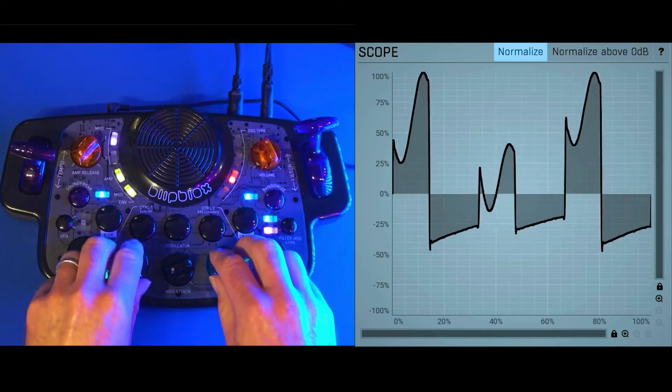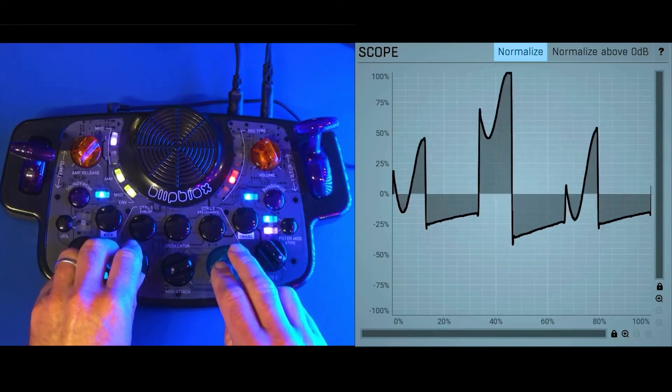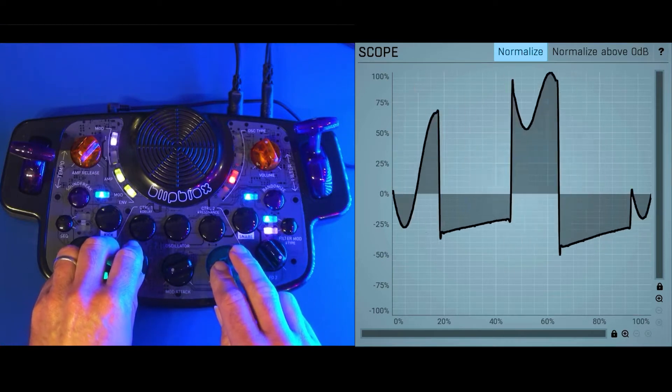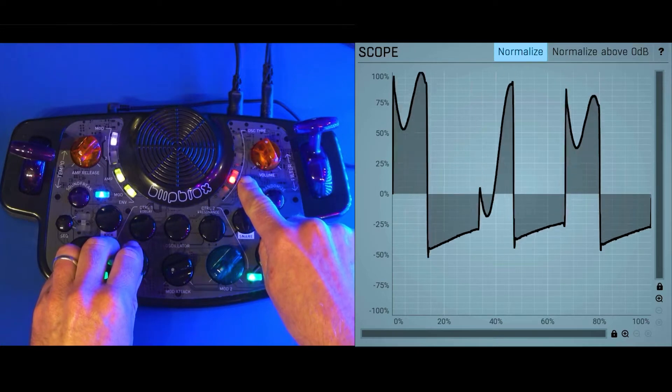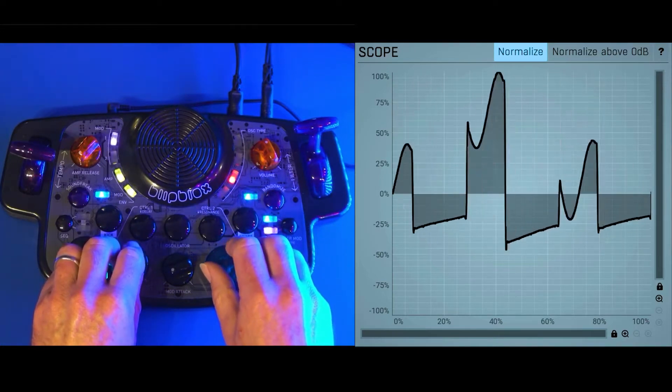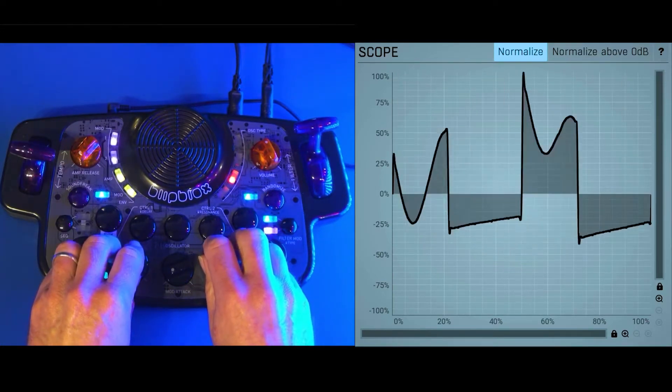So here, as you might know, the Blip Blocks has two modulation sources. We're controlling them manually with the knobs here. And we have the oscillator. We have basically Red 3 selected, and that's how we indicate the 16 different oscillator types.